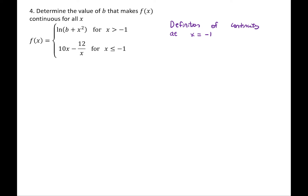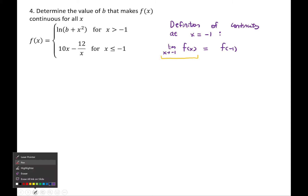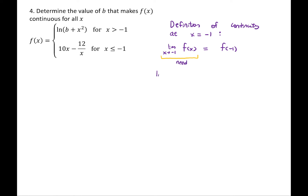Definition of continuity at x=−1: we need the limit as x→−1 of f(x) to equal f(−1). For that limit to exist, we need the left and right limits to agree. So we need: limit as x→−1⁻ of f(x) = limit as x→−1⁺ of f(x) = f(−1). This is the alternative statement of continuity incorporating left and right limits.